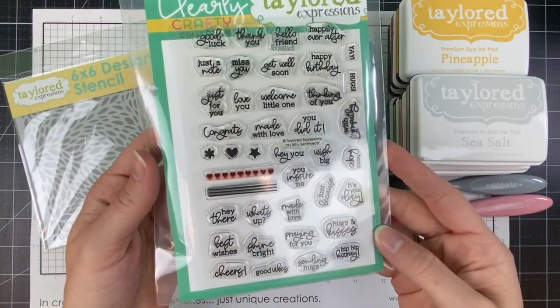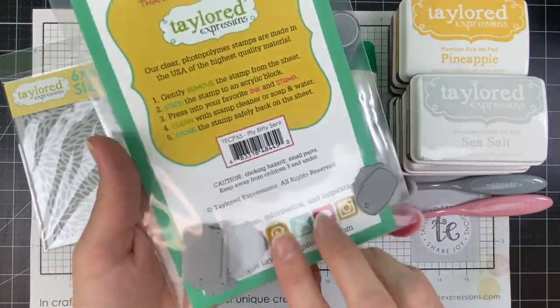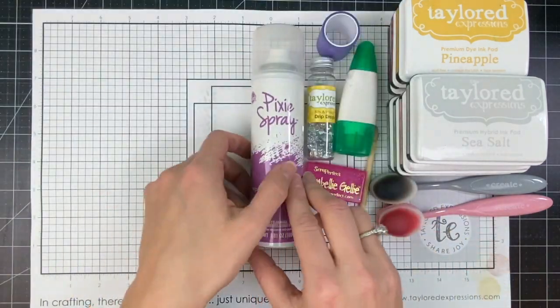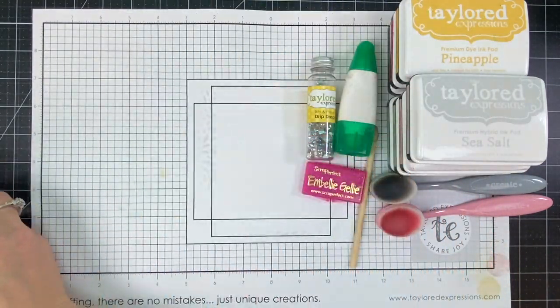I'll be using the Brimming with Love and Brimming with Love Sentiments, along with the freebie stamp for March. Then I have the Pretty Petals stencil, along with Pixie Spray and purple tape.